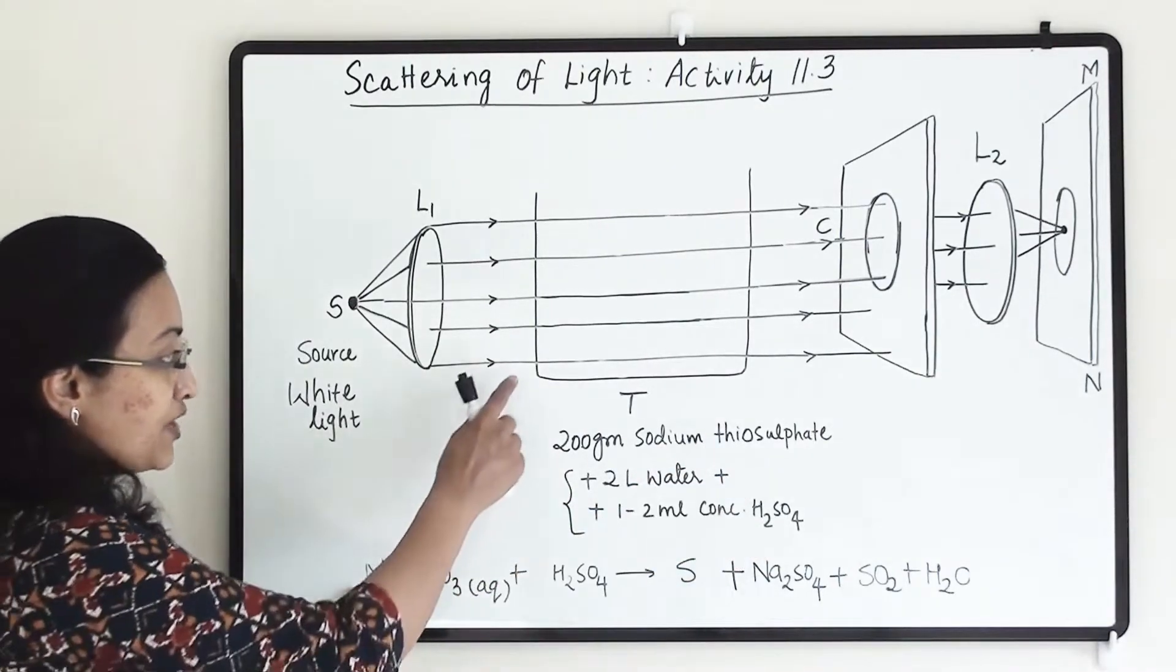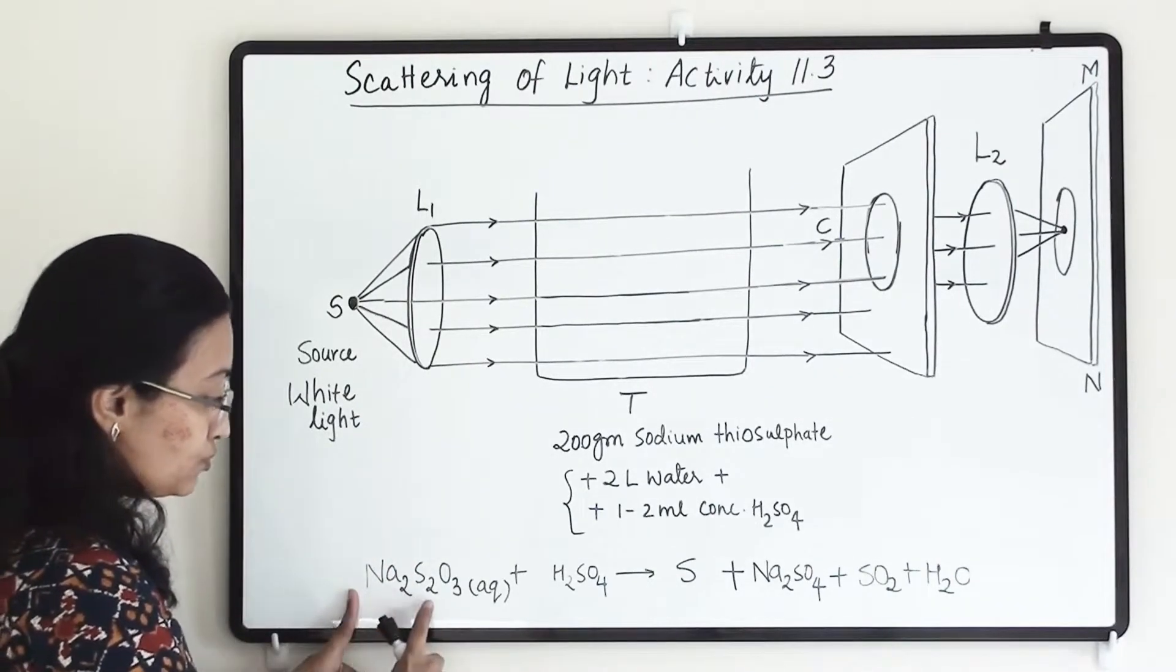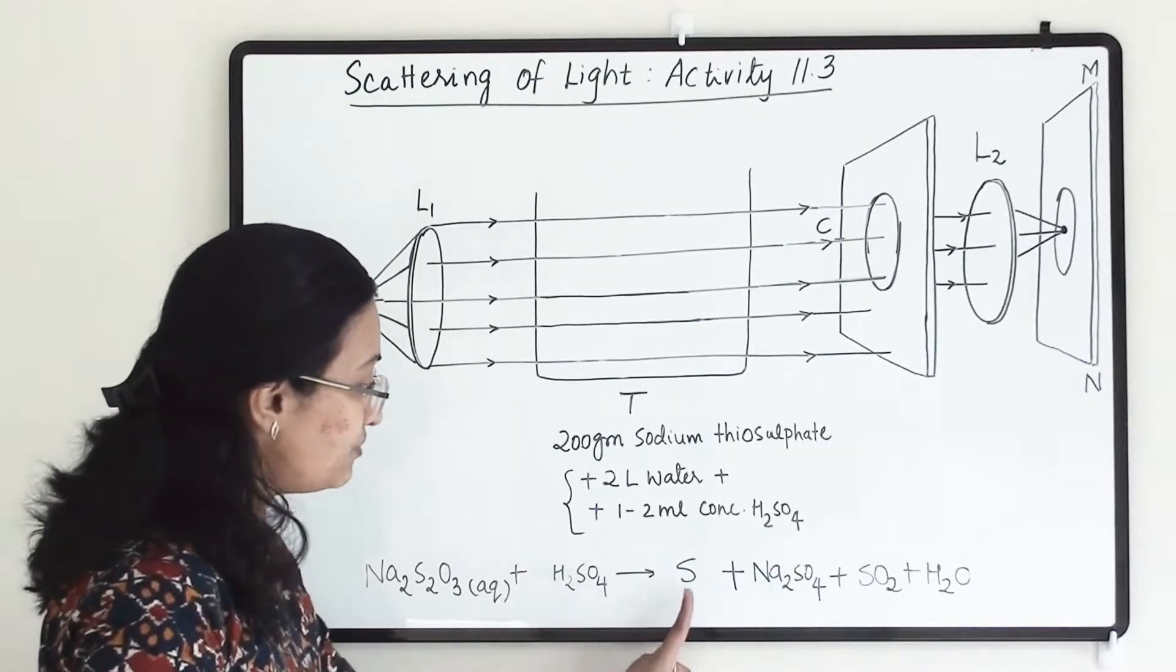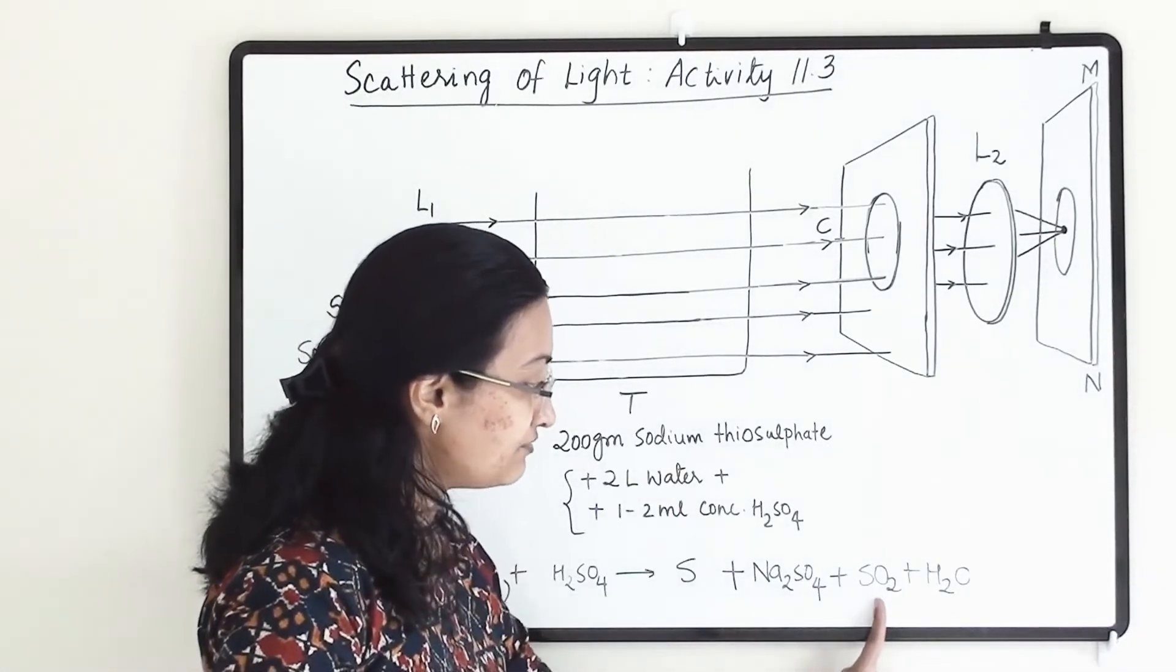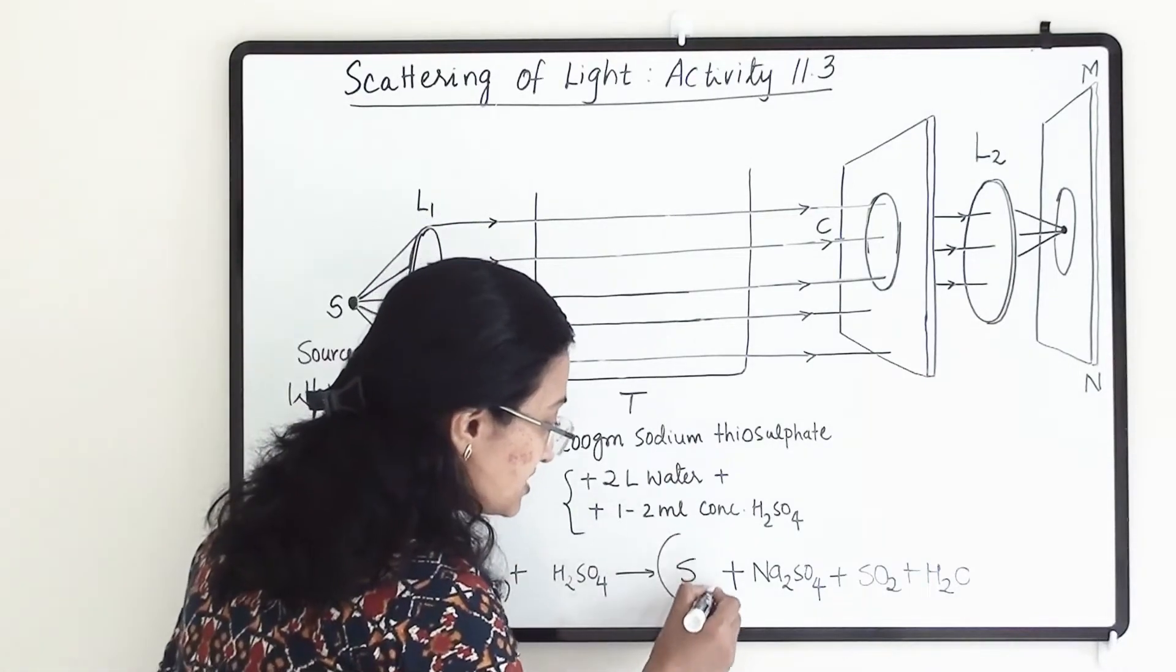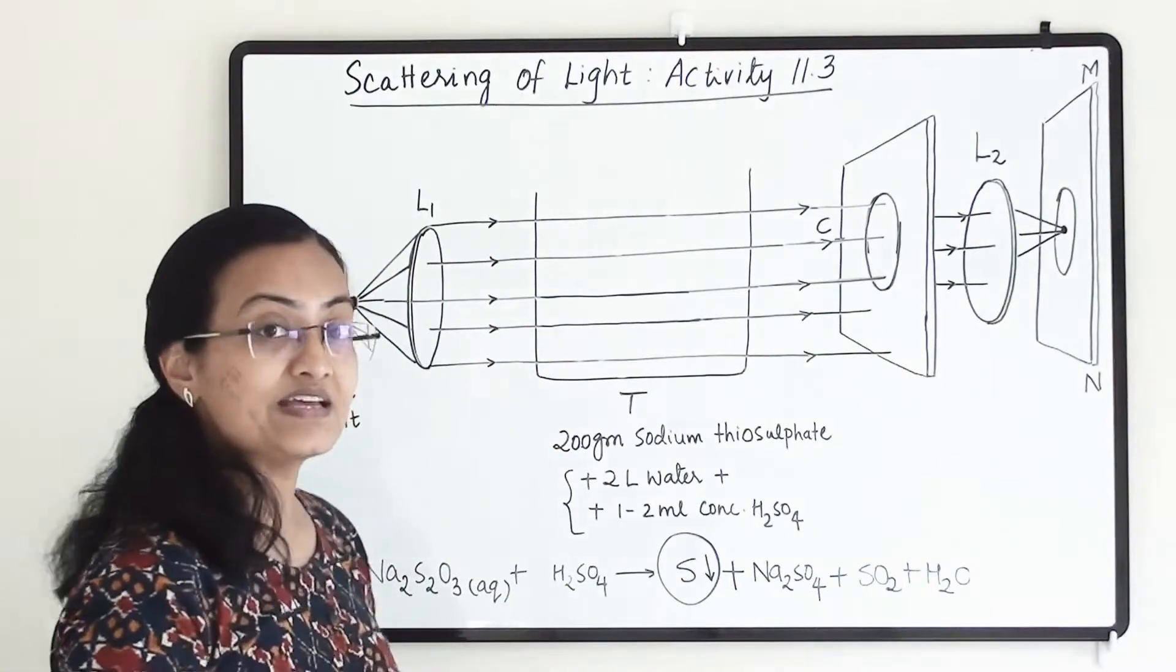So this reaction is going to happen over here that sodium thiosulfate, that is Na2S2O3 will react with sulfuric acid and we will get sulfur, sodium sulfate, sulfur dioxide and water. Here this is important for us which is sulfur. So sulfur will come out as a precipitate. Sulfur will be a precipitate.